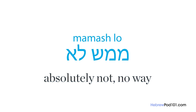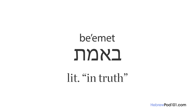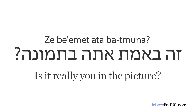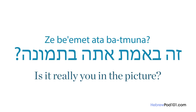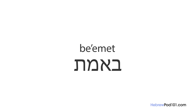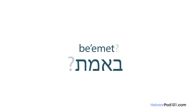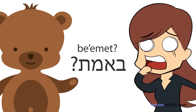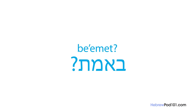The next adverb is 'be'emette,' which literally means 'in truth' and is used to make sure something is true or real. For example, 'is it really you in the picture?' would be 'ze be'emette ata batmuna?' Unlike the previous words, this word can also stand alone. You can ask 'be'emette?' when you hear something surprising, like 'there's a bear in the kitchen' — 'be'emette?'